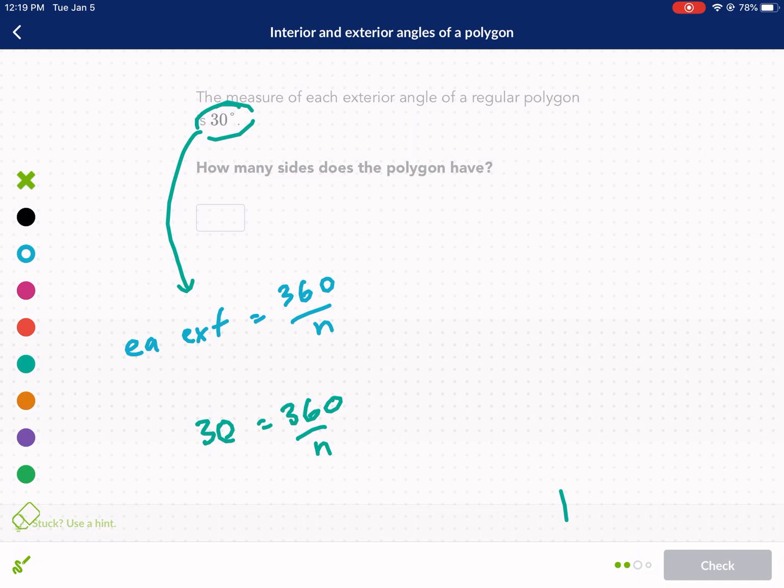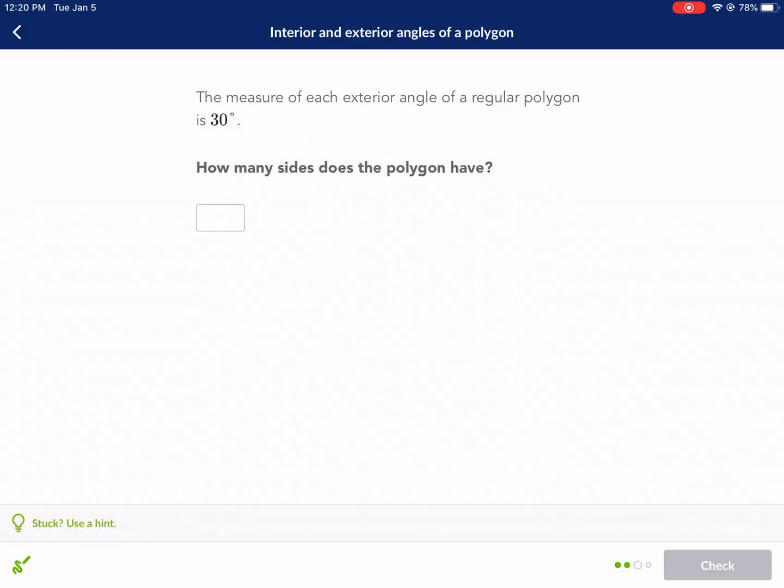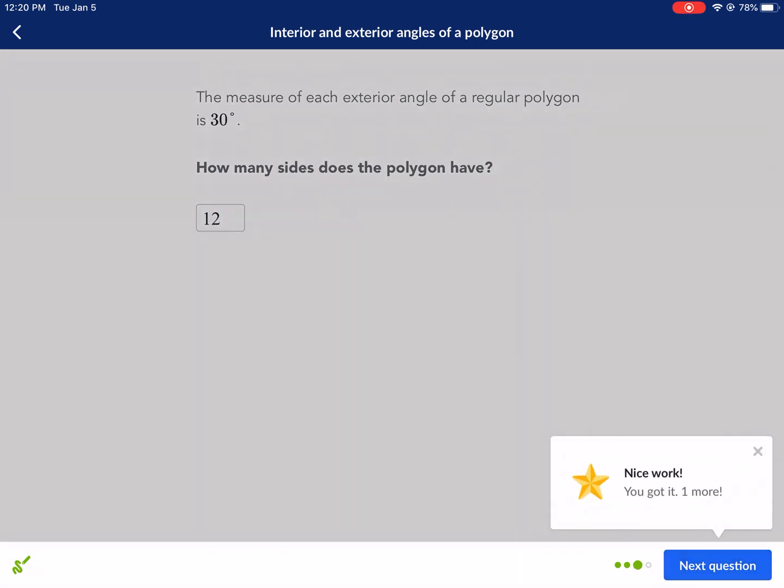And we say equals 360 divided by n. I'm going to do probably the easiest way that I normally show. So I put 30 over 1, and I cross-multiply, and I get 30n equals 360, and then I divide by 30. And that gives me n equals 12.